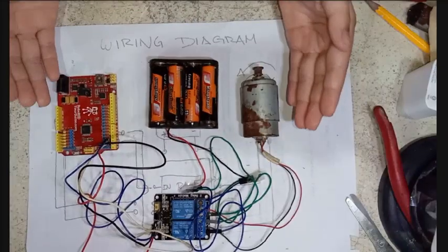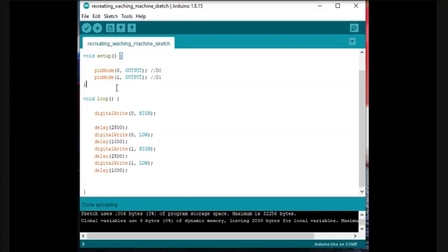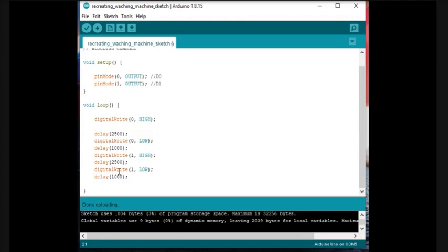The wiring is done so open your sketch. And I have here the code for our washing machine setup. In the void setup portion we use the digital output zero and digital output one and pin mode, we set them to output.